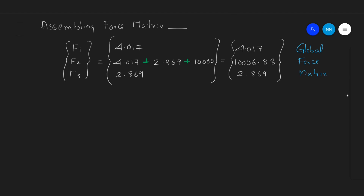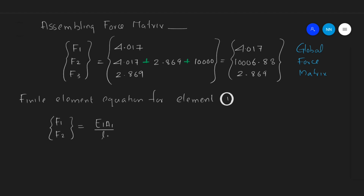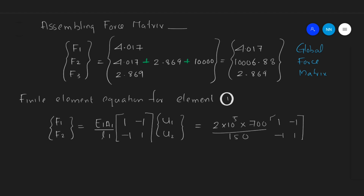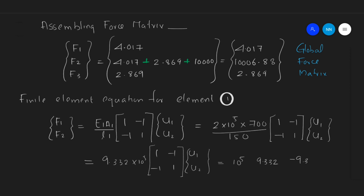Now let's find the finite element equation for each element. For element number 1 (nodes 1 and 2): F1, F2 = (E₁A₁/L₁) × [1, -1; -1, 1] × [U1, U2]. Substituting the values for Young's modulus, area, and length, this yields 9.332×10⁵ × [1, -1; -1, 1] × [U1, U2].